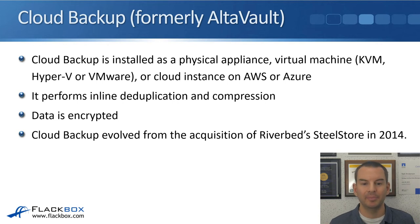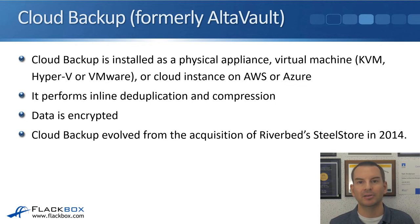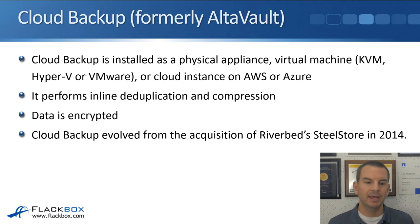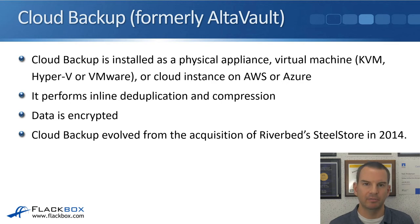Cloud Backup is installed as a device — either a physical appliance or a virtual machine running on KVM, Hyper-V, or VMware — or you can run it as a cloud instance in AWS or Azure. It performs inline deduplication and compression for cost savings, and also does data encryption before sending backups off to the cloud for security. Cloud Backup, or AltaVault, evolved from the acquisition of Riverbed Steel Store in 2014. Riverbed are best known for network compression and are very good at it, so you get very good compression and cost savings with the Cloud Backup device.